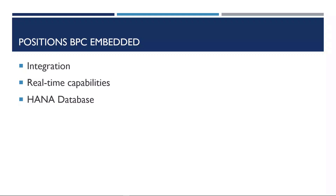Now let's look at the positioning and strengths of BPC Embedded. The strengths of BPC Embedded can be summarised as follows. First, integration: BPC Embedded incorporates SAP standard info objects, which means that the same master data used in SAP ERP or S/4 is available for planning. This is not just limited to master data — planning models can incorporate actual data through composite providers. In S/4, the ability to plan master data attributes has also been added.